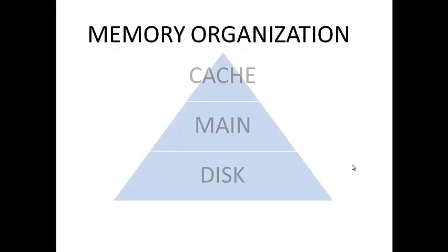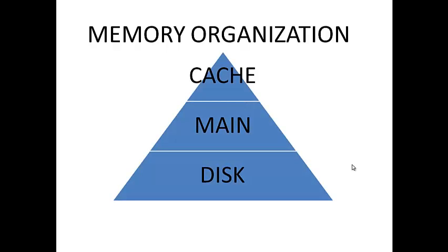Memory organization contains three different types of memory: cache memory, main memory, and disk memory. Cache memory is small in size; main memory is larger than cache memory; and disk memory is larger than main memory. Cache memory is the fastest among all, main memory is faster than disk memory but slower than cache memory, and disk memory is the slowest memory in the system.